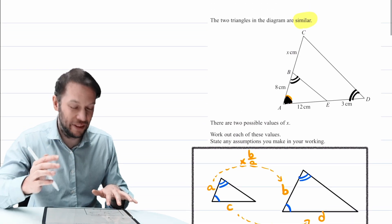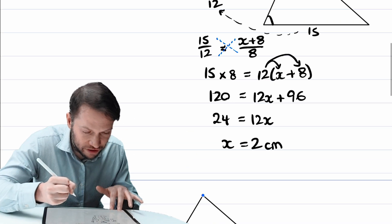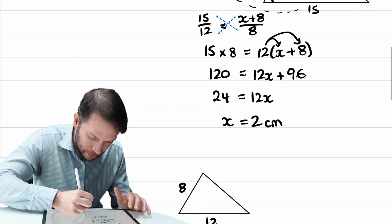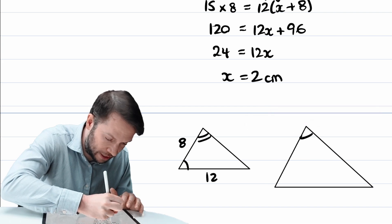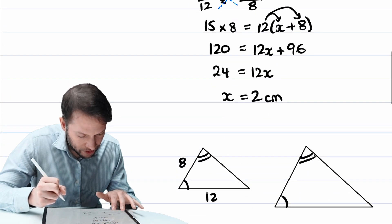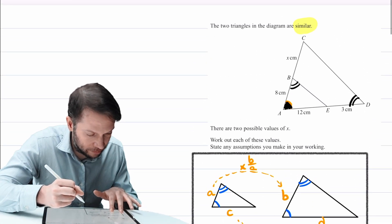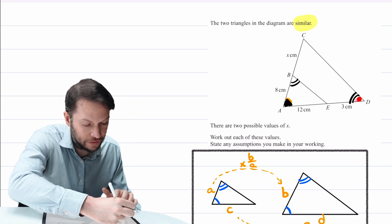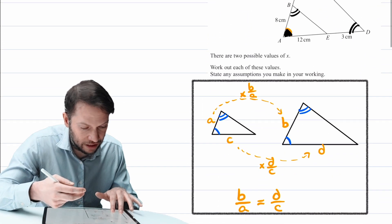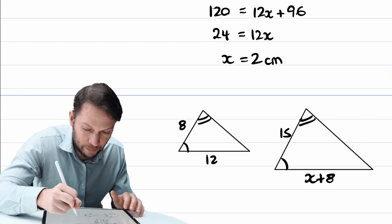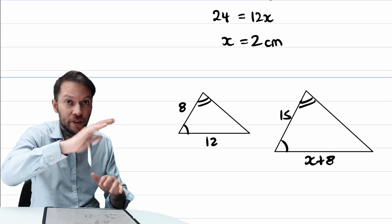So now we're going to draw the triangles again but the other way around. The smaller triangle stays the same with lengths 8 and 12. But when we draw the bigger similar triangle, we flip it over. The side between the single-marked and double-marked angles is now 15, and the other side is x plus 8. Comparing the two diagrams, the bigger triangle is flipped upside down — so x plus 8 is now at the bottom and 15 is at the top.